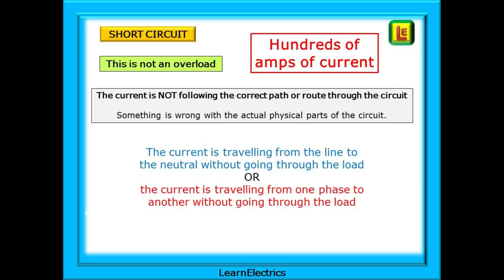So, a short circuit is completely different to an overload. Hundreds of amps of current will flow. The breaker will trip almost instantly. The current is not following the correct path or route through the circuit. Something is wrong with the actual physical parts of the circuit. Something is broken or damaged. Something has happened. The current is travelling from the line to the neutral without going through the load. Or, in a three-phase system, the current could be travelling from one phase to another without going through the load.